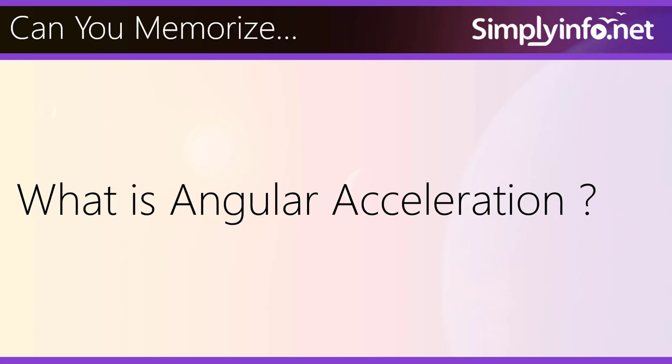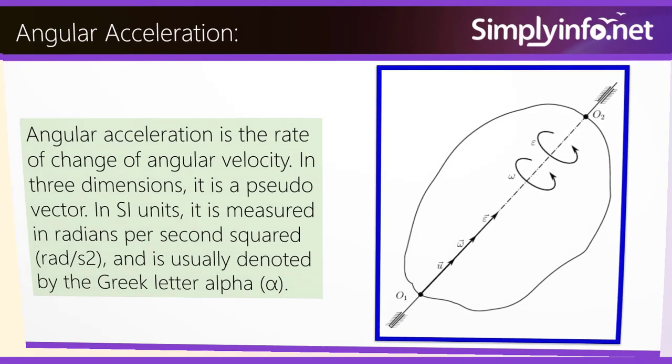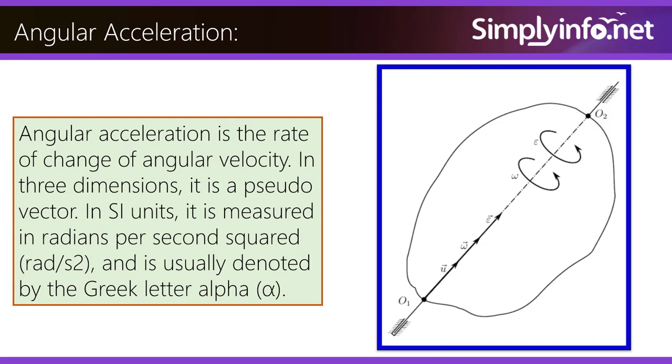So now do you know what is angular acceleration? It is the rate of change of angular velocity. In three dimensions, it is a pseudo vector. In SI units, it is measured in radians per second square and is usually denoted by the Greek letter alpha.